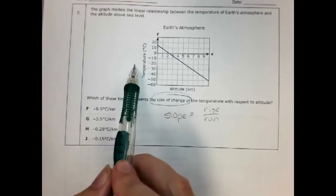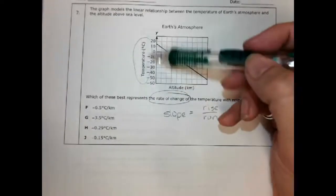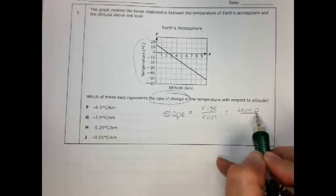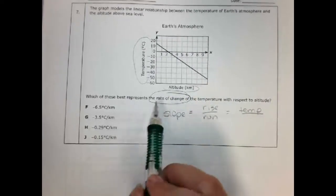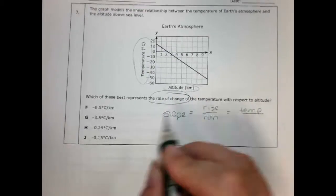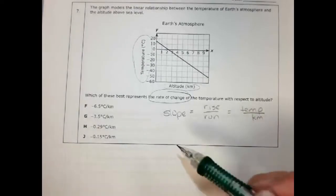Rise on my graph, look, there's the words right there. It's temperature, rise because that goes up and down. That's temperature over altitude, which is a distance in kilometers. And they have kilometers over my answer, so I'm going to write kilometers. Temperature per kilometer.